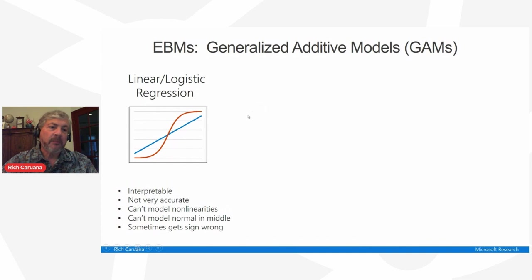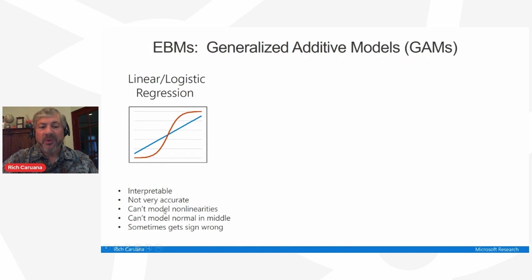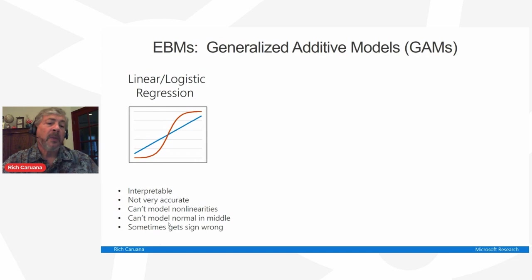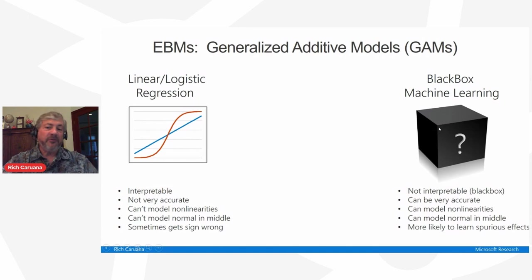Let me briefly explain what EBMs are. On the left is the simplest additive model — linear or logistic regression — which is the gold standard for interpretability. Unfortunately, on complex data sets it's not very accurate because it can't model nonlinearities, and sometimes it even gets the sign wrong on some features, which can be dangerous in critical domains. We don't usually present linear regression as graphs because you just look at the coefficient. On the right is full black-box machine learning — deep neural nets, CNNs, boosted trees, random forest — very accurate but not very interpretable.